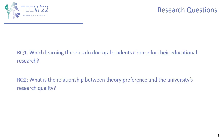To explore theory choice in doctoral educational research, we specify two research questions. First, which learning theories do doctoral students choose for their educational research? Second, what is the relationship between theory preference and the university's research quality?